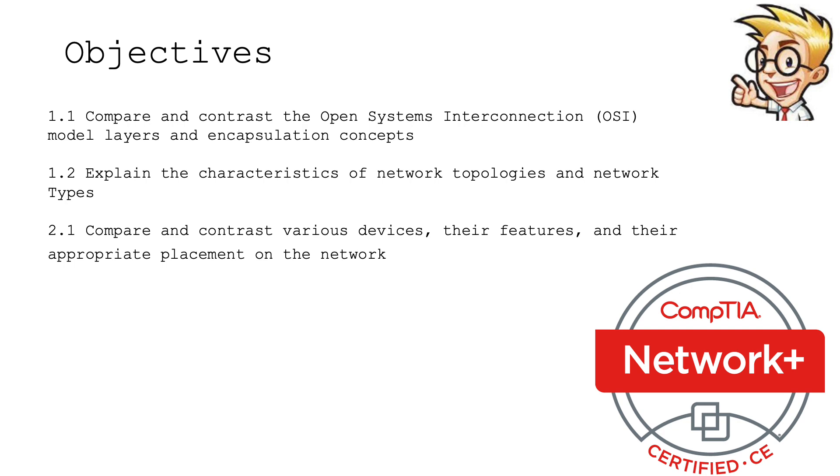We have 1.2: explain the characteristics of network topologies and network types. And then we have 2.1: compare and contrast various network devices, their features, and their appropriate placement on the network. Let's get started.